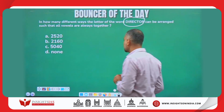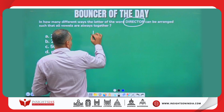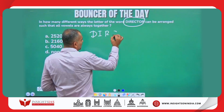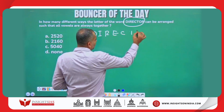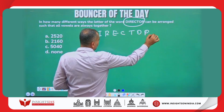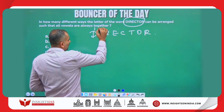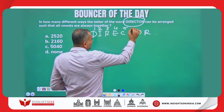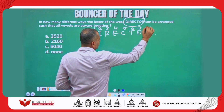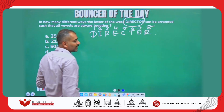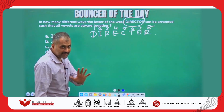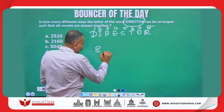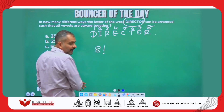I will just write the word D-I-R-E-C-T-O-R. How many characters? 1, 2, 3, 4, 5, 6, 7, 8. If it is 8 characters and they are all different, it would be 8 factorial.